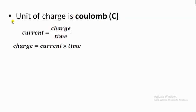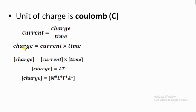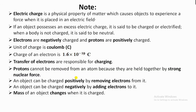The unit of charge is the coulomb. Since current is charge divided by time, we can write: charge = current × time. The dimension of charge is therefore the dimension of current multiplied by the dimension of time — current is A (ampere) and time is T — so the dimensional formula of charge is M⁰ L⁰ T¹ A¹.